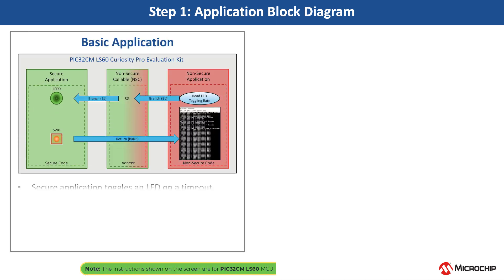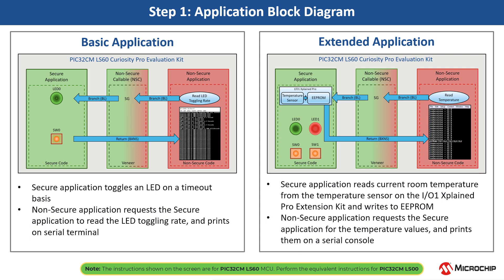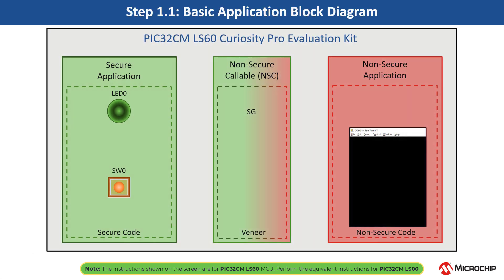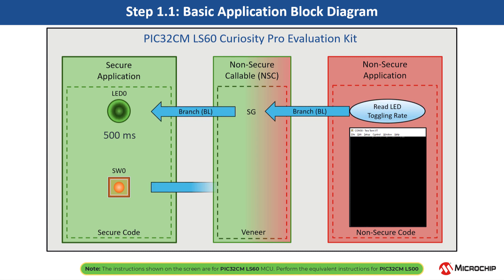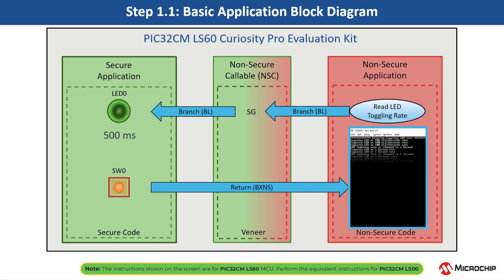The application includes basic and extended functionality. In the basic application, the secure mode toggles LED0 when switch SW0 is pressed on a timeout basis, and the periodicity changes from 500 milliseconds to 1 second, 2 seconds, 4 seconds, and back to 500 milliseconds each time SW0 is pressed. The non-secure application requests the secure mode application to read the LED toggling rate and prints it on the serial terminal. The LED toggling rate data is transferred to the non-secure mode application through non-secure callables.